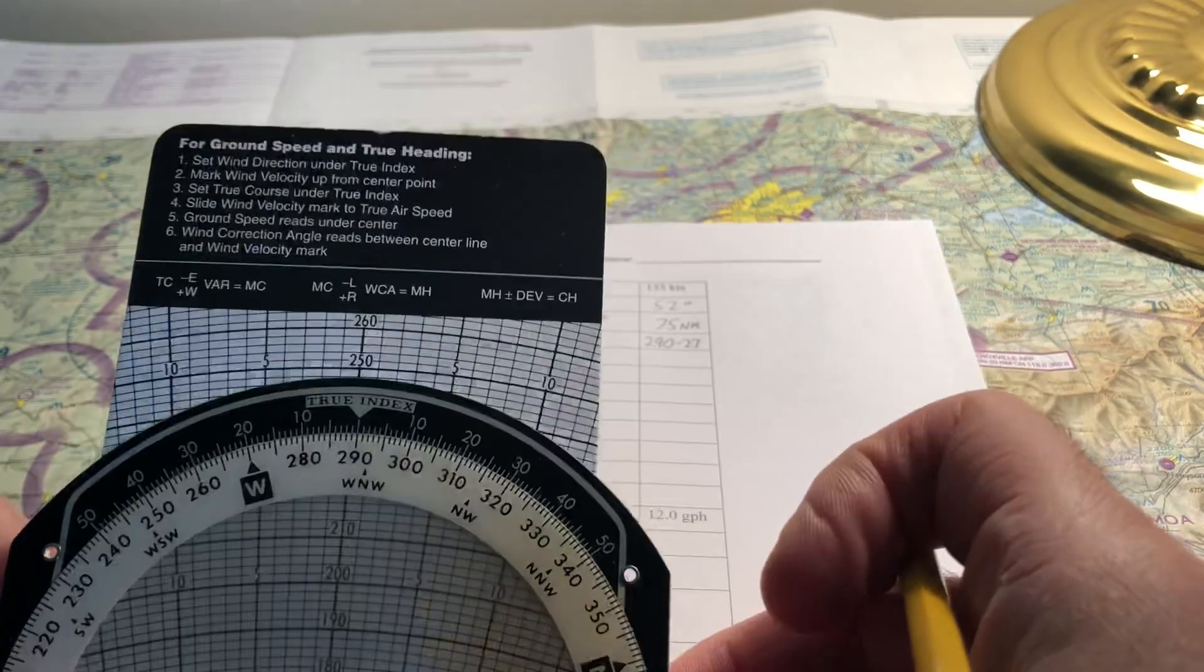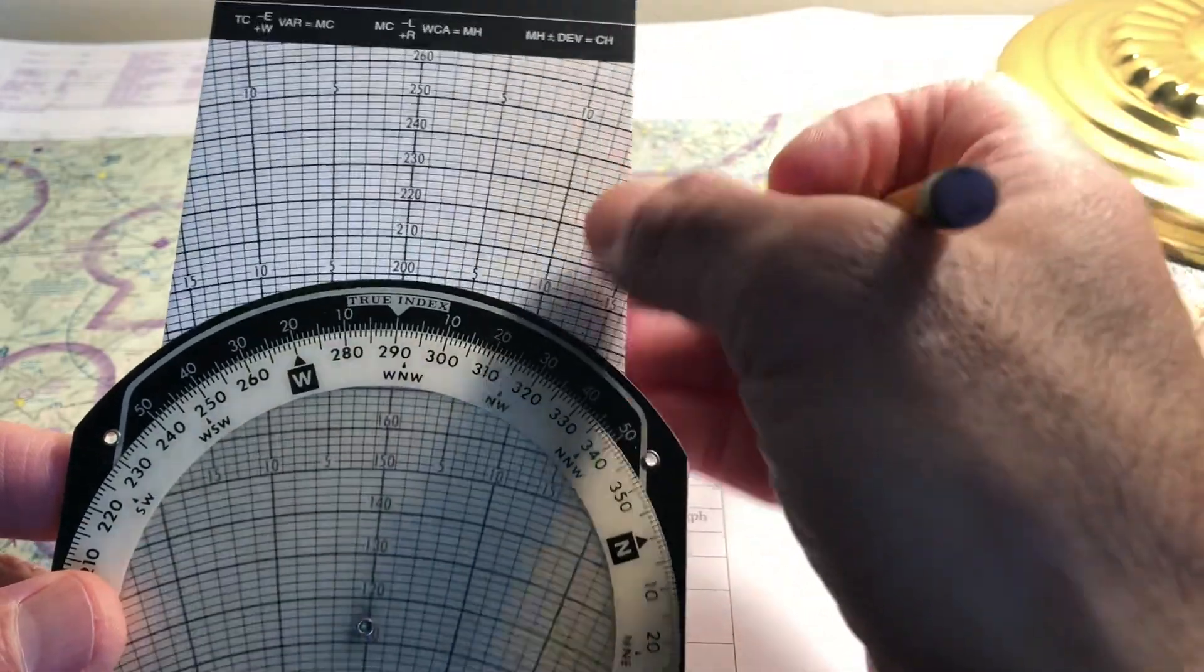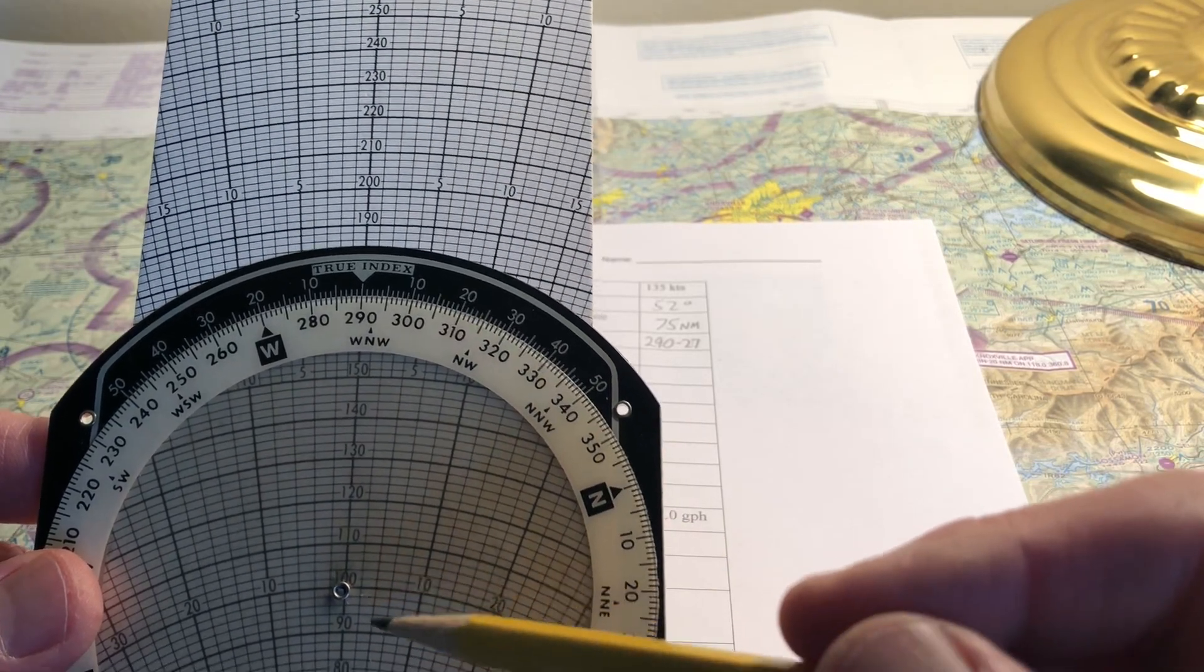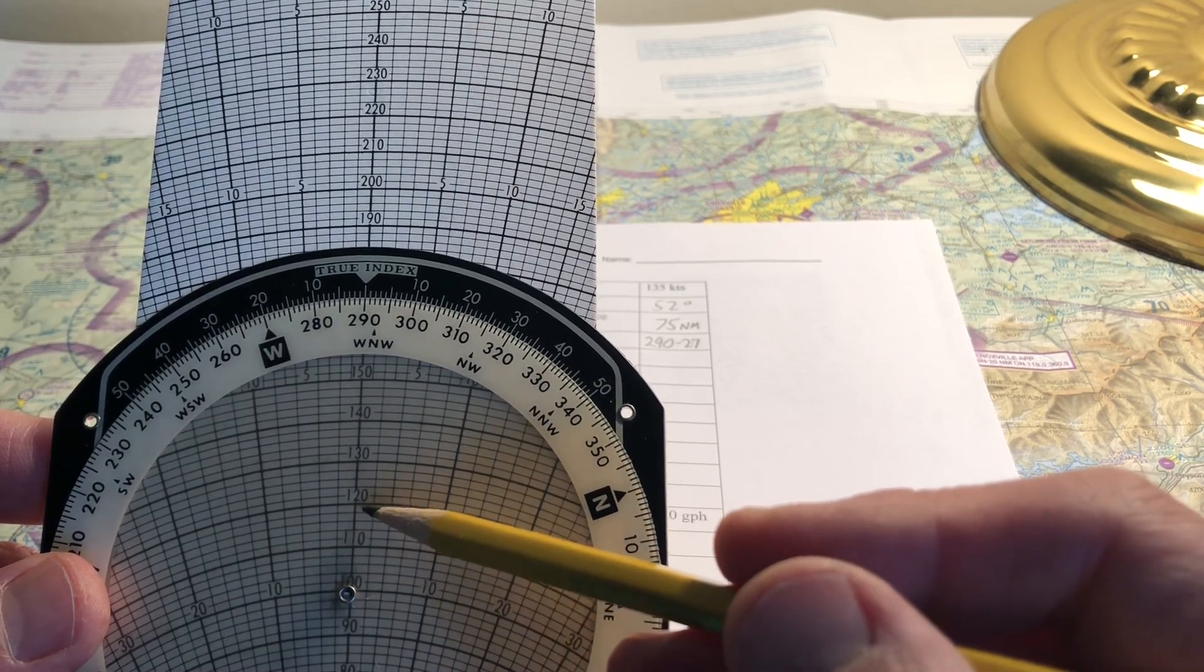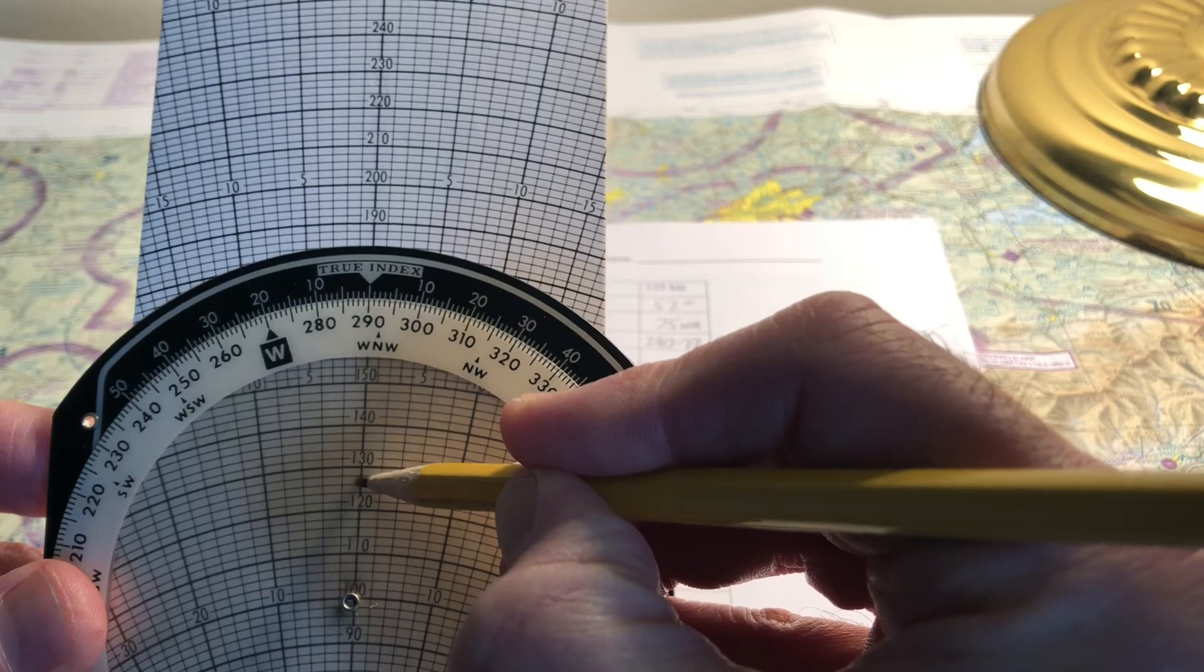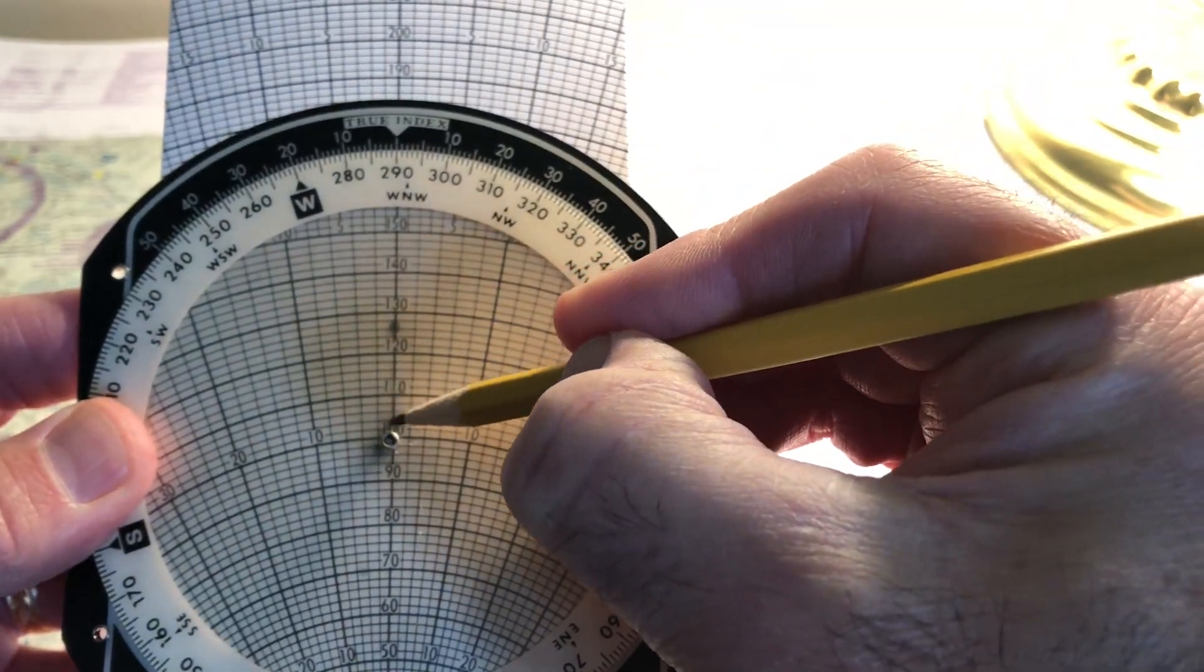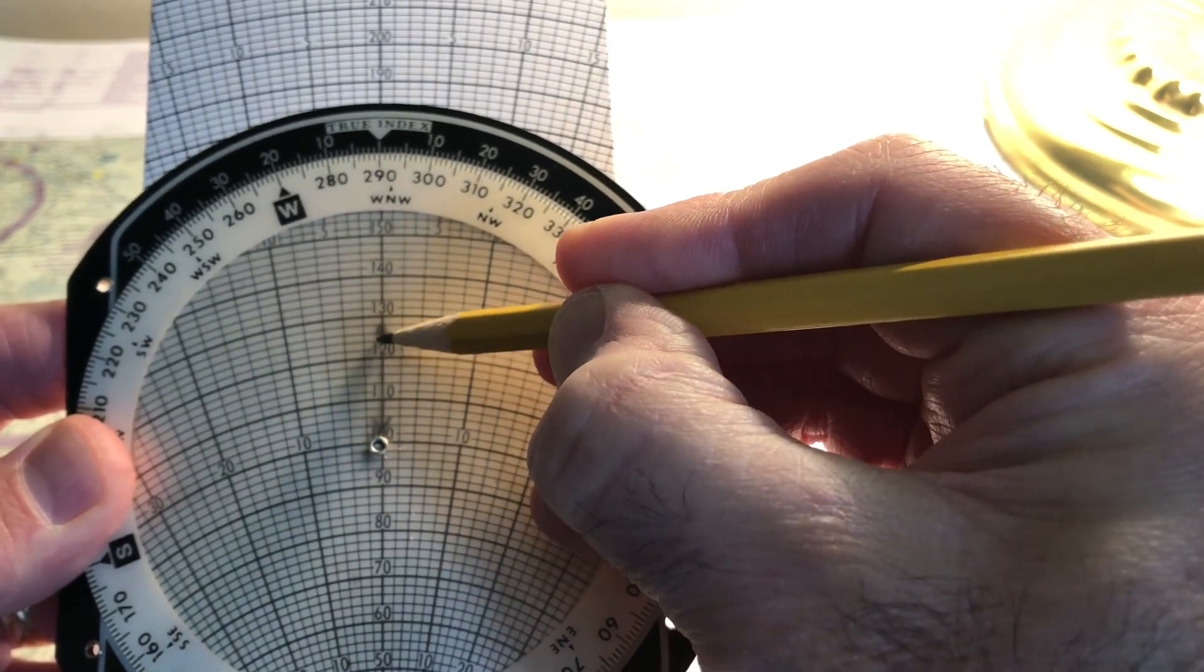The next step, number two, mark the wind velocity up from the center point. So again, I like to slide my center point to the 100 knot arc so that it makes it easy. We said that the wind velocity is forecast to be 27 knots. So 10, 20, and 27 is right about there. Okay, so I'm making a wind dot. And some people like to draw a line and an arrow back to the center point to signify the direction of the wind. So that's the direction of the wind.